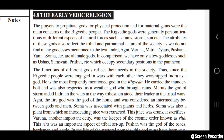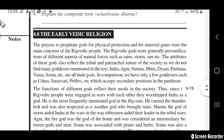Early Vedic Religion: prayers to propitiate gods for physical protection and material gains were the main concern of the Rigvedic people. The Rigvedic gods were generally personifications of different aspects of natural forces such as rain, storms, etc. The attributes of these gods also reflect the tribal and patriarchal nature of society, as we do not find many goddesses mentioned. Indra, Agni, Varuna, Mitra, Dyaus, Pushan, Yama, Soma, etc. were all male gods. In comparison, only a few goddesses such as Usha, Saraswati, and Prithvi are mentioned, occupying a secondary position in the pantheon.